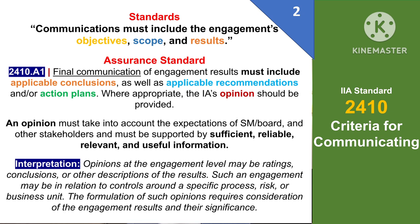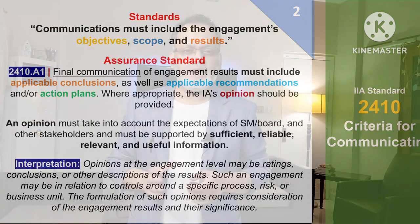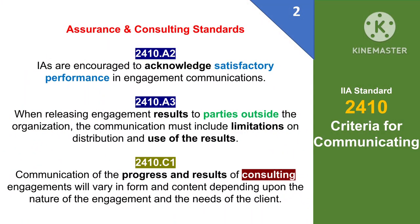As per interpretation, opinions at the engagement level may be ratings, conclusions or other descriptions of the results. Such an engagement may be in relation to controls around a specific process, risk or business unit. The formulation of such opinions requires consideration of the engagement results and their significance. As per assurance standard A2 of 2410, internal auditors are encouraged to acknowledge satisfactory performance in engagement communications. As per A3, when releasing engagement results to parties outside the organization, the communication must include limitations on distribution and the use of results.